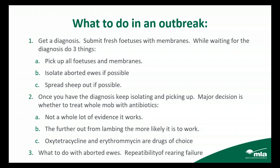What to do with aborted ewes: before we had the vaccine, we used to identify aborted ewes and expose mobs or ewe lambs that hadn't been joined to them, hoping to get some immunity — it works so-so. Whether you should keep these ewes is a little problematic given the repeatability of rearing failure, but if you've got a well-identified cause of abortion it's probably worth having them go around again. In the case of Campylobacter, they rarely if ever have large amounts of infection in the uterus afterwards, so the chances of them not getting in lamb because of residual infection is pretty low.